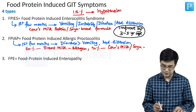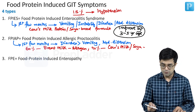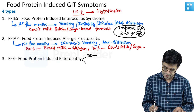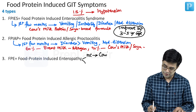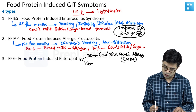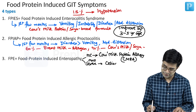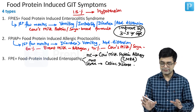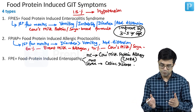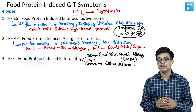Third, we have FPE, that is Food Protein Induced Enteropathy. Food Protein Induced Enteropathy is of multiple subtypes. The most common type is cow's milk hypersensitivity, also called cow's milk protein allergy, written in short as CMPA. The most severe form of food protein induced enteropathy is celiac disease. Both cow's milk protein allergy and celiac disease have been discussed separately in the pediatric GI part, but they are both included in the category of food protein induced enteropathy.